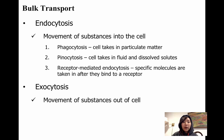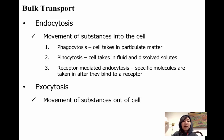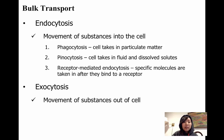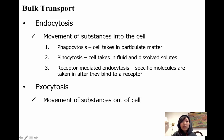The last thing we're going to talk about is bulk transport. This involves the taking in or releasing of really large types of molecules. Endocytosis — endo means 'in' — is when the cell takes in substances from outside to bring inside. There are three types you need to know: phagocytosis, which is like the cell eating large things outside of it; pinocytosis, which is like the cell drinking in fluids or very small solutes; and receptor-mediated endocytosis, where the cell takes in specific molecules that bind to receptors on the cell membrane.